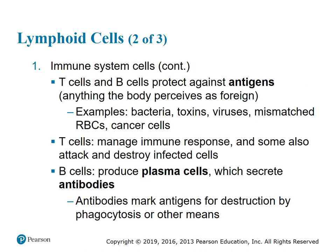T cells and B cells protect against antigens. An antigen is anything that the body perceives as foreign — examples include bacteria, toxins, viruses, mismatched red blood cells, and cancer cells. T cells manage the immune response and some also attack and destroy infected cells. B cells produce plasma cells, which secrete antibodies. Antibodies mark antigens for destruction by phagocytosis or other means.